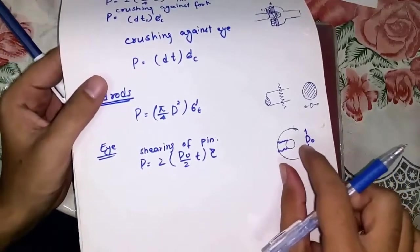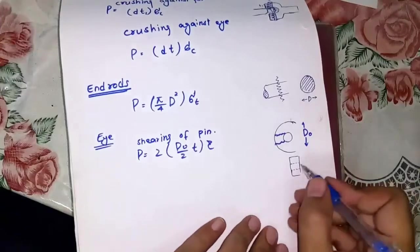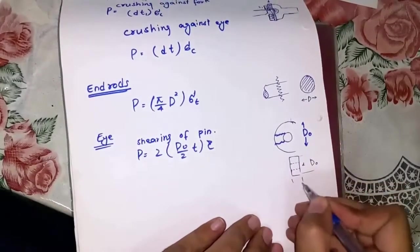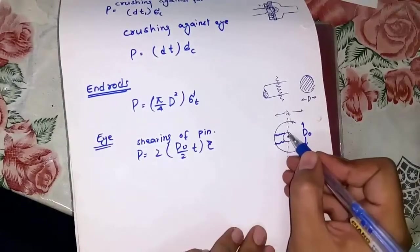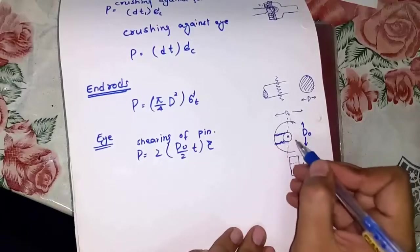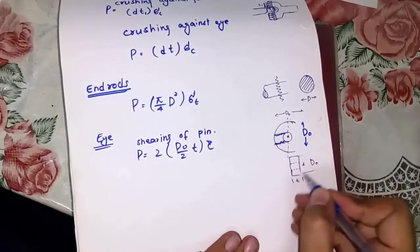The failure will propagate from the center to the periphery by covering the distance half of d0, so half of d0 and thickness. 2 is for the safety purposes.